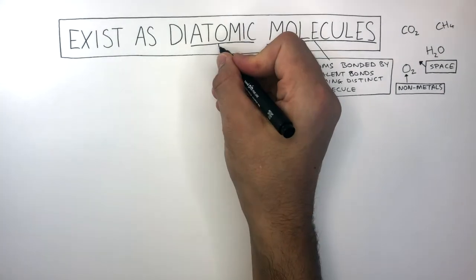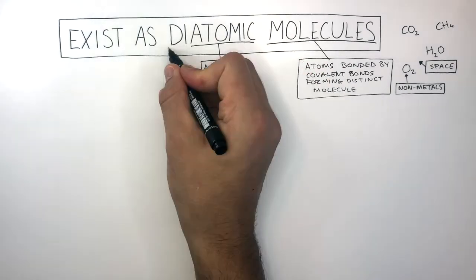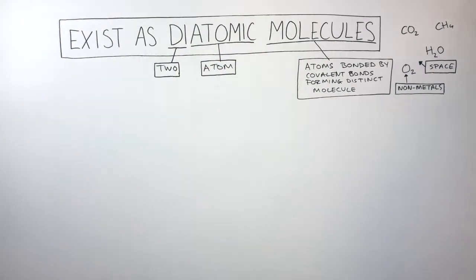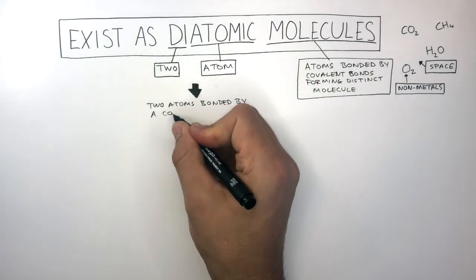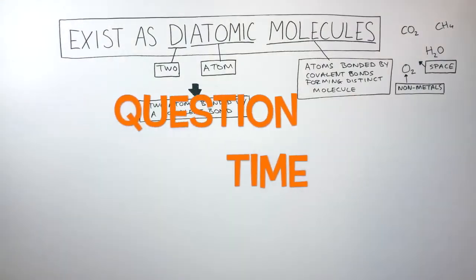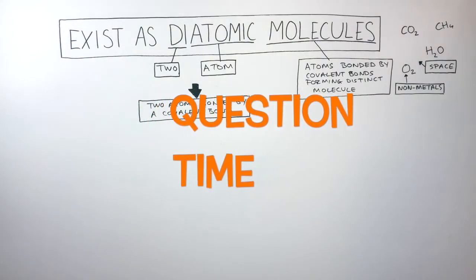Atomic just means atom, and di means two. So if the word molecule means a group of atoms bonded by covalent bonds, and diatomic means two atoms, if you put diatomic and molecule together, it just means two atoms bonded by a covalent bond. It's question time. Attempt these questions to check your understanding.